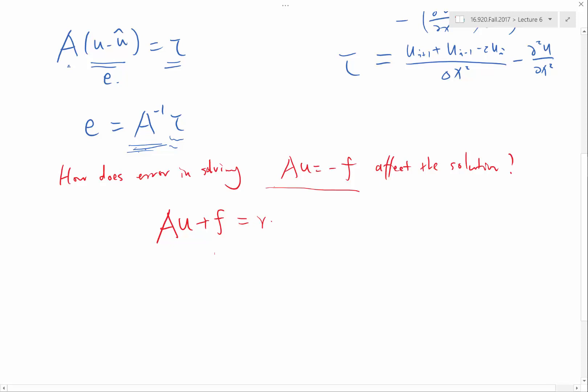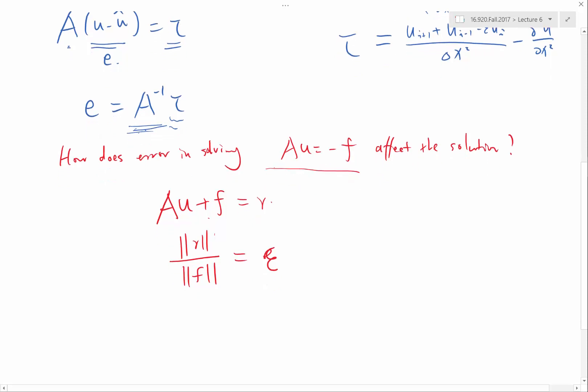And this residual would be relatively small with respect to f. So let's say the magnitude, the norm of r over the norm of f is equal to epsilon, pretty small. So the question is: